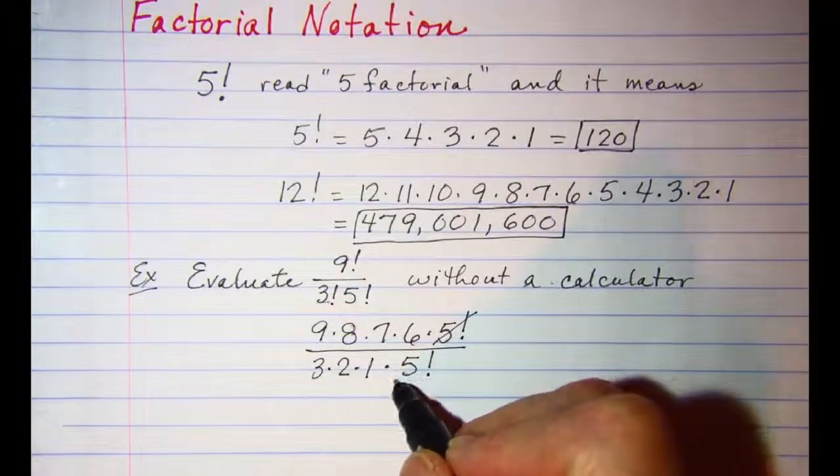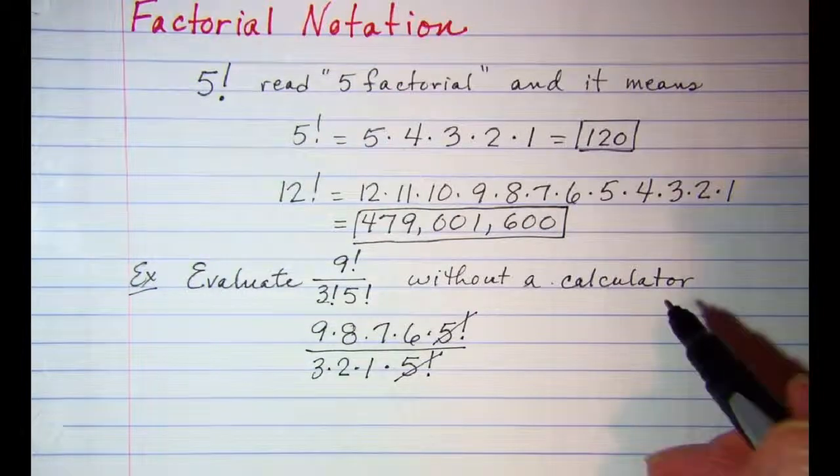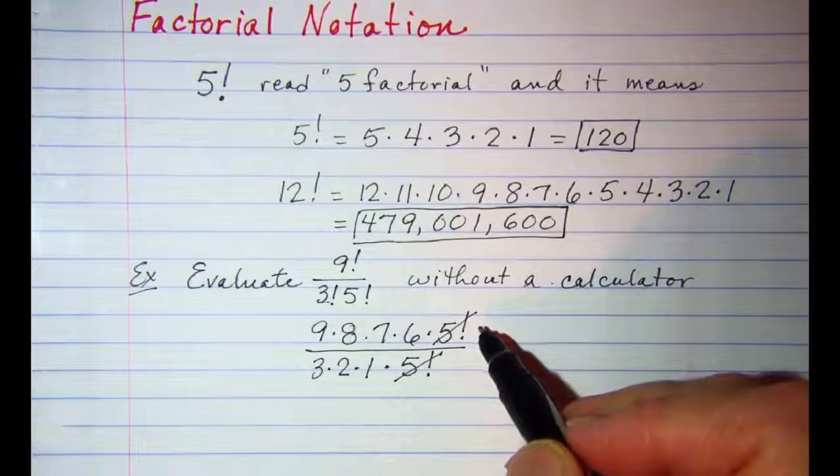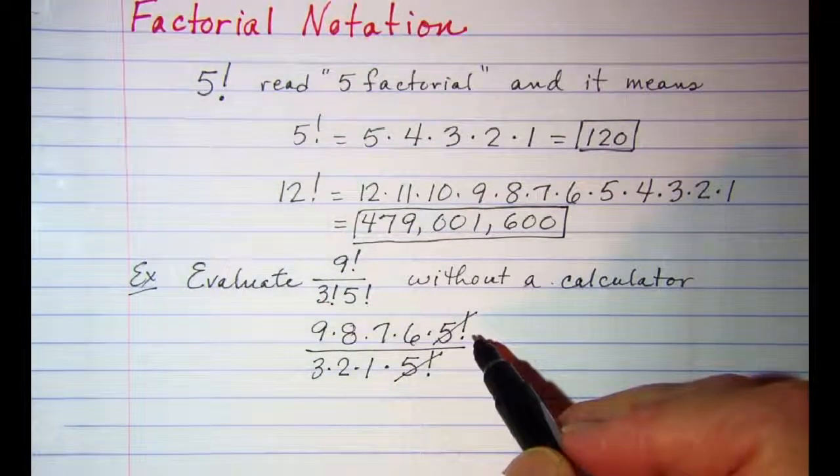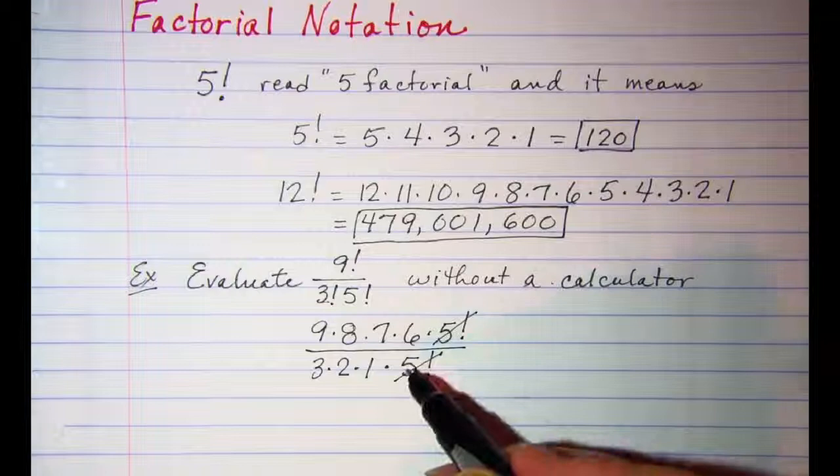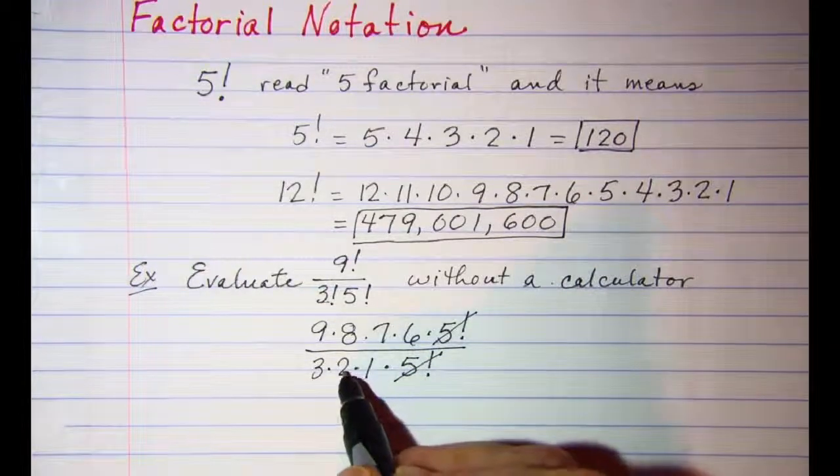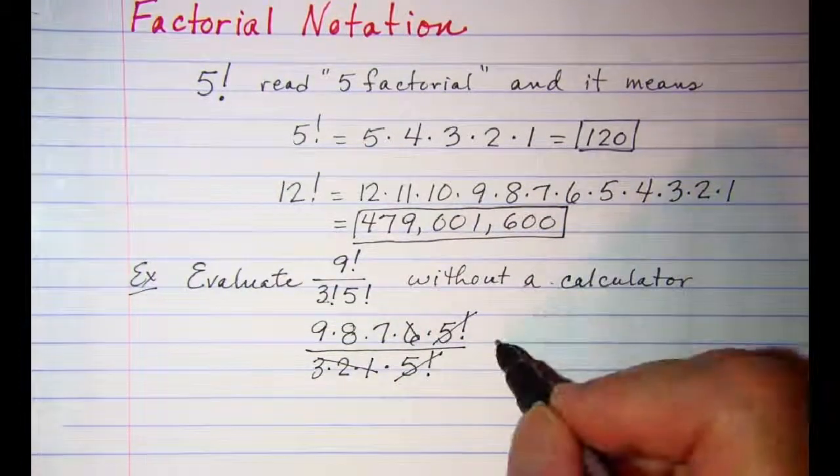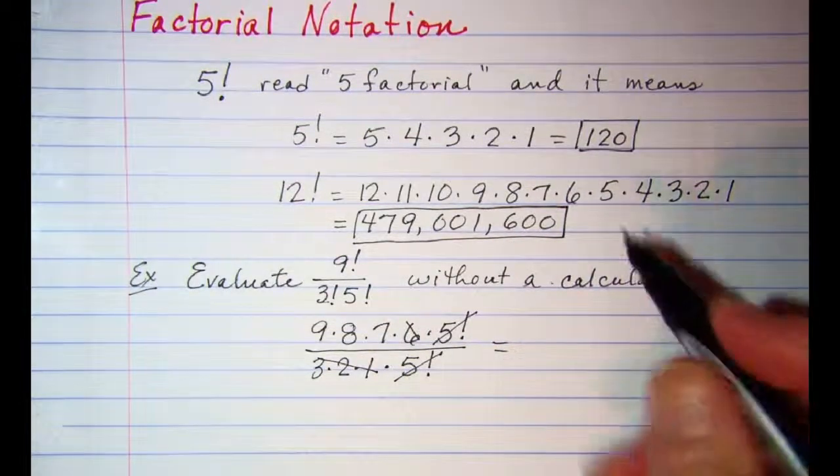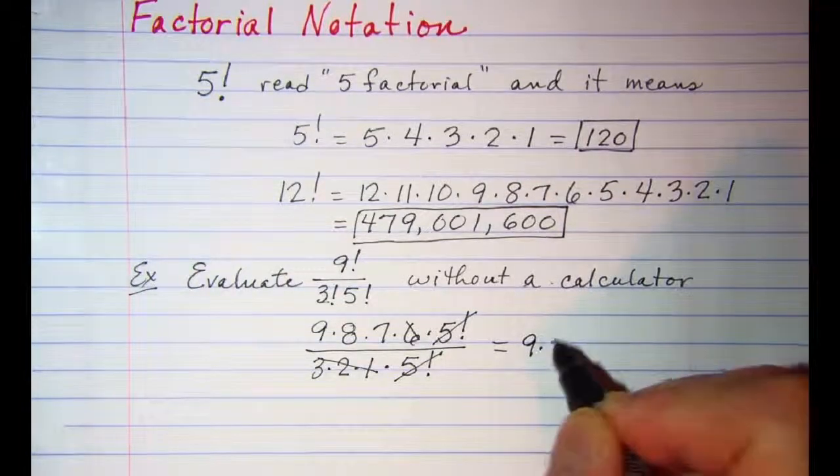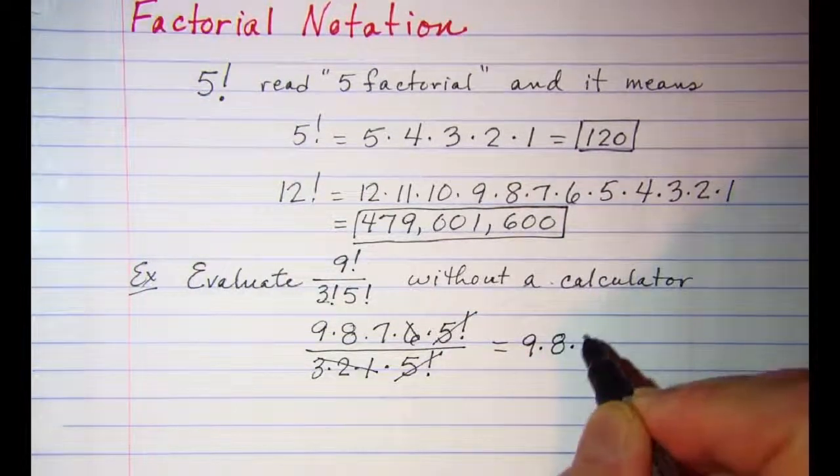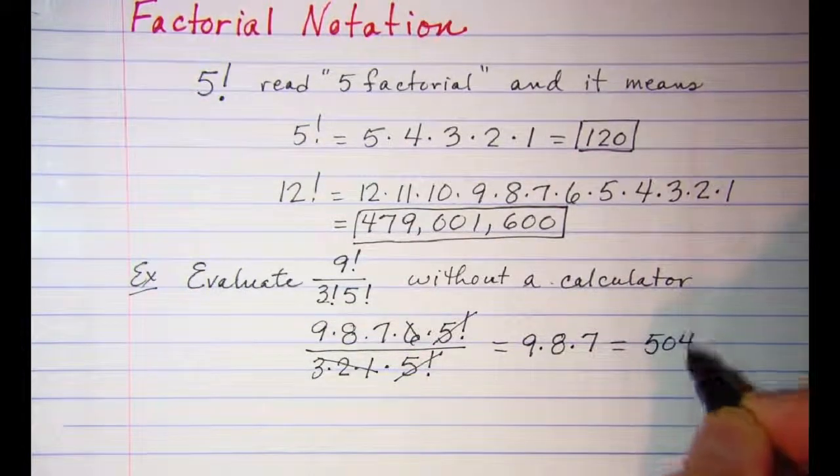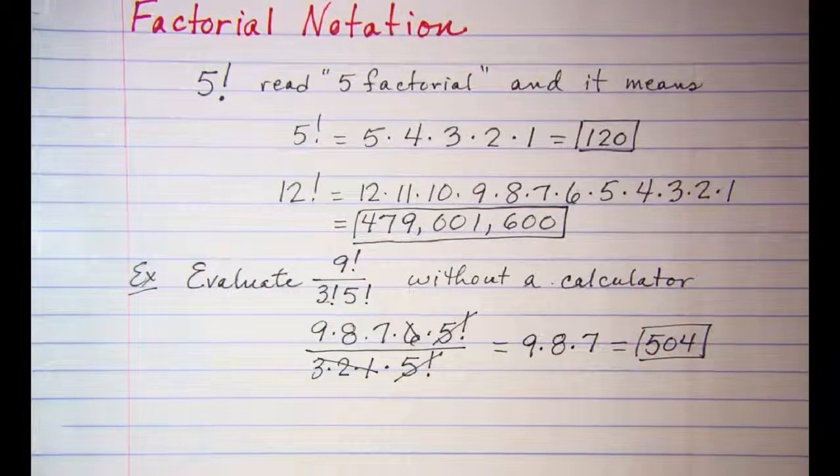Now I have a factor of 5! in the numerator and a factor of 5! in the denominator, and those cancel out. And then I can also take this 3 × 2 and cancel it with this 6. So my actual problem simplifies to 9 × 8 × 7, which is 504.